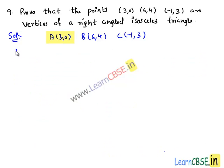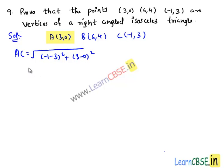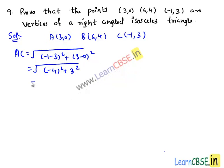Now let us find the length AC. AC equals under root of (-1 minus 3) whole square plus (3 minus 0) whole square, that equals under root of (-4) square plus 3 square, that equals under root of 16 plus 9, which is equal to root 25, which is equal to 5 units.